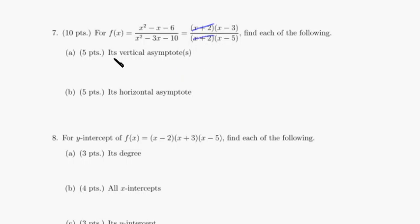Then we just set the denominator equal to 0. So we set x minus 5 equal to 0. We can add 5 to both sides of the equation to get x equals 5. That is the vertical asymptote.